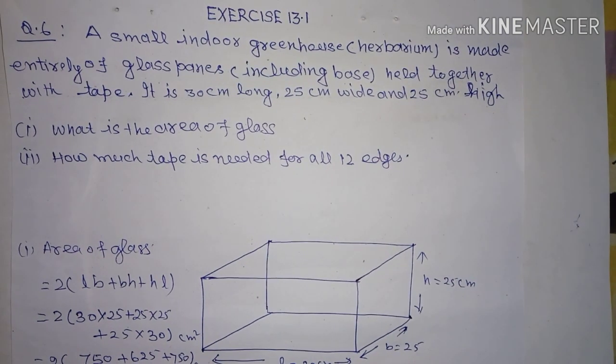A small indoor greenhouse is made entirely of glass pane, including base, held together with tape. It is 30 cm long, 25 cm wide and 25 cm high. What is the area of glass and how much tape is needed for all 12 edges?